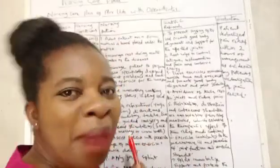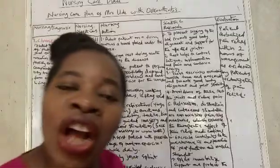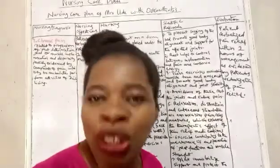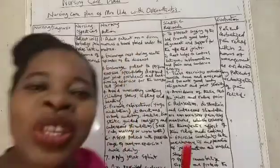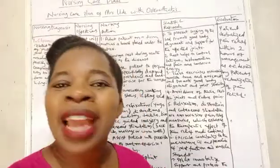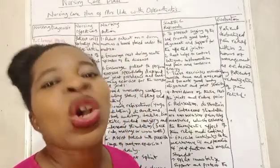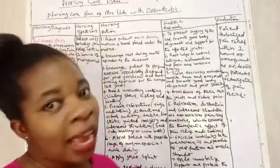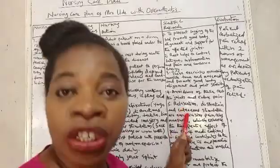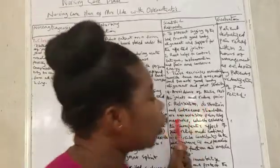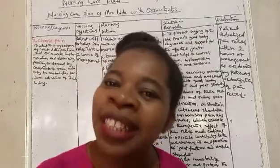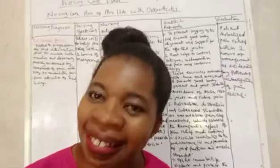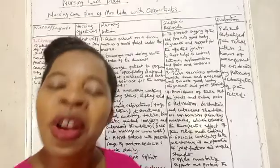Nursing action number five: promote relaxation through yoga, meditation, distractions — visual, auditory, tactile — use guided imagery and cutaneous stimulation like back rub, massage or warm bath. Scientific rationale: relaxation, distraction and cutaneous stimulation are non-invasive pain relief measures which enhance the therapeutic effects of pain relief medications.